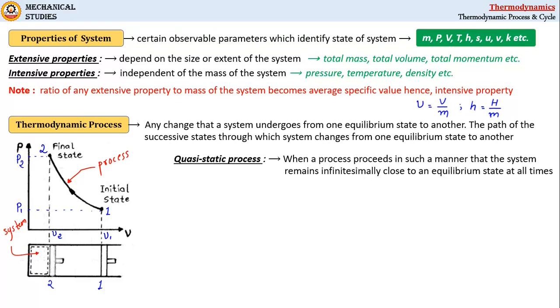This is done for two reasons: first, quasi-static process is easy to analyze, and second, work-producing devices deliver most of the work when operated in a quasi-static manner.